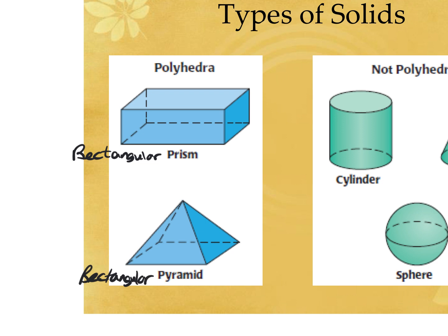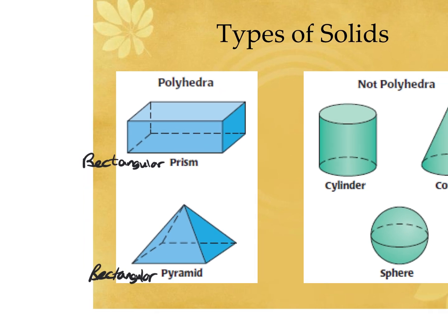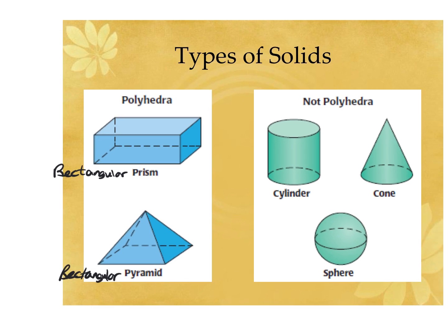When our solids have curved sides, they're not polyhedrons or polyhedra. We can give them specific names though — we have a cylinder, a cone, and a sphere pictured here, but they're not polyhedrons because they have curved sides.